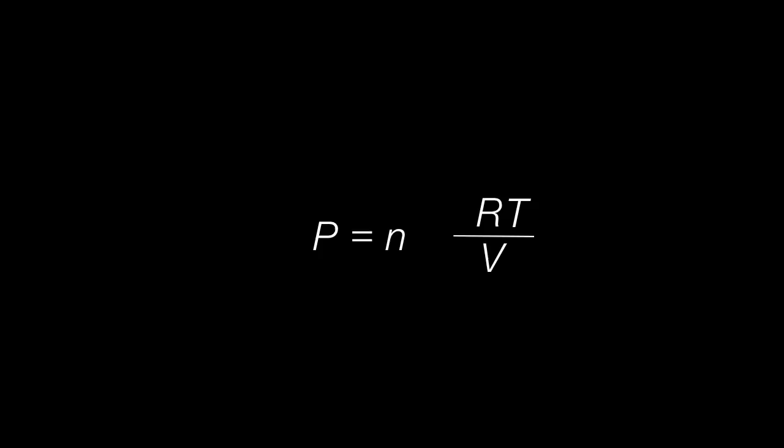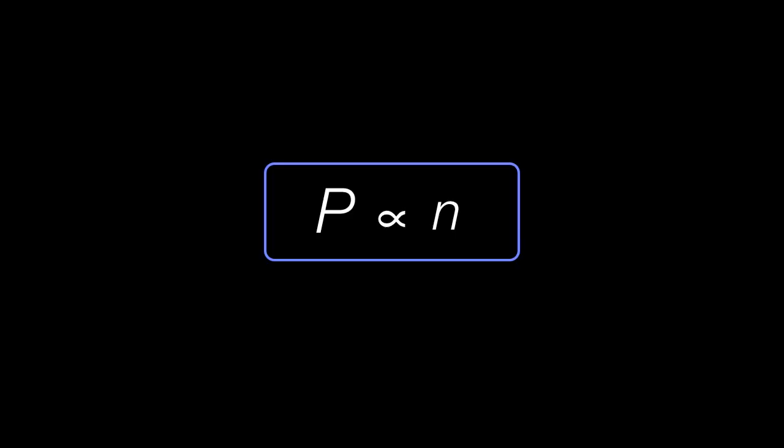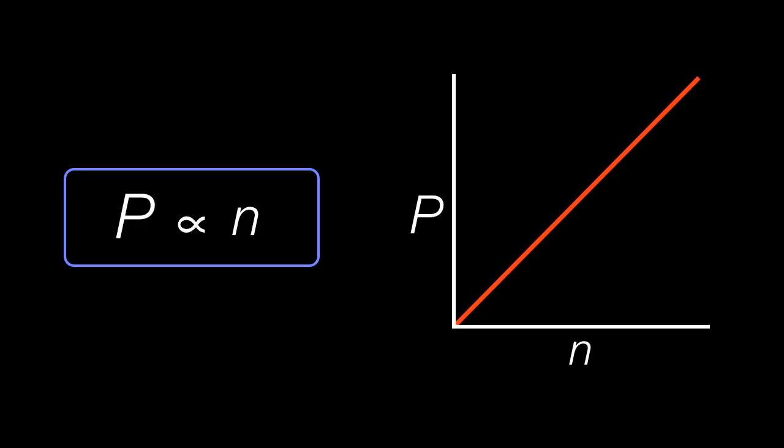We're also going to hold the temperature and volume constant, so that we can split out the RT over V term. We're going to call that a constant, and this really allows us to think about pressure only in terms of the number of moles. What that means is pressure is directly proportional to the number of moles. So it's real easy to think about the calculations here.